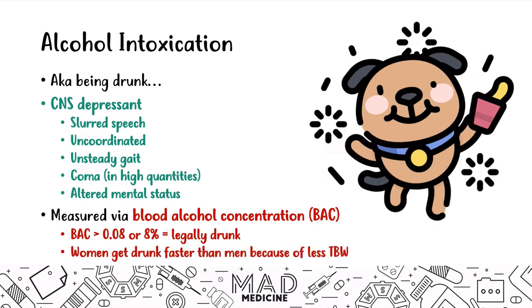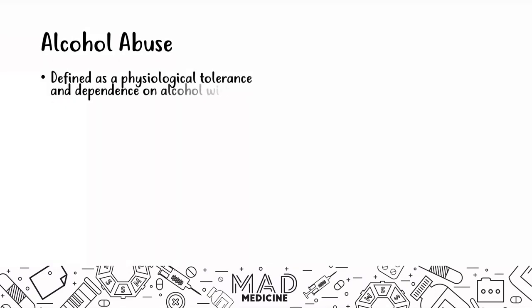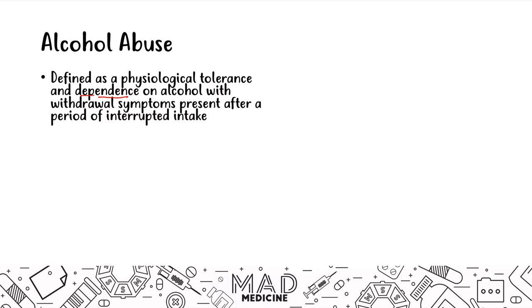Women get drunk faster than men simply because they have less total body water. So for a woman, three drinks might get her legally drunk, whereas for a male it may take four or five. Alcohol abuse is different than alcohol intoxication — it's defined as having a physical or physiologic tolerance and dependence. Withdrawal symptoms should also present after a period of interrupted intake.